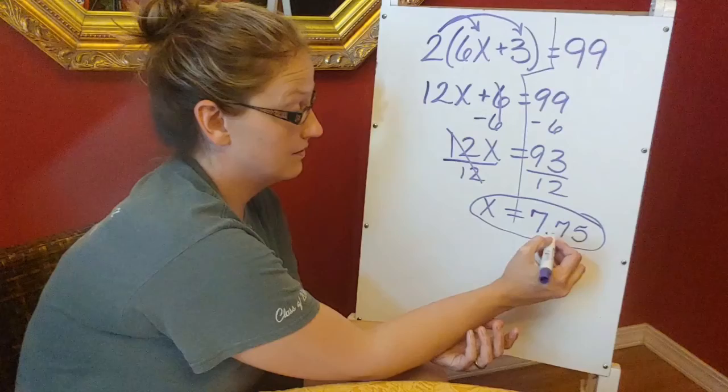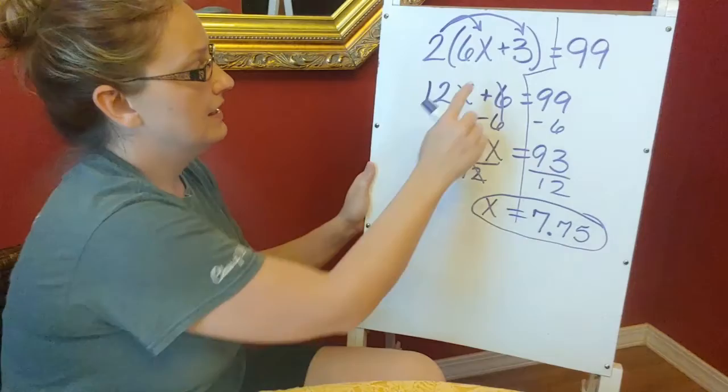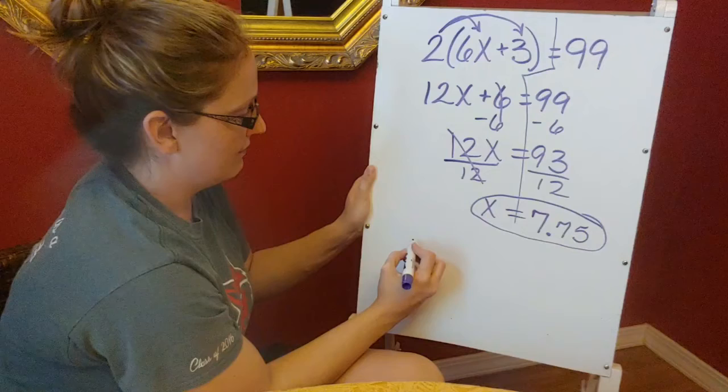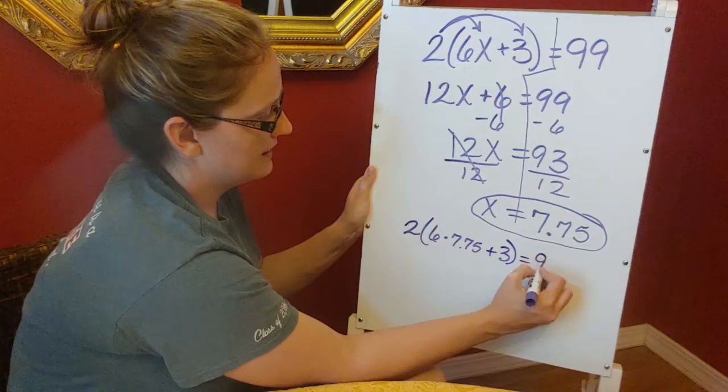7.75. If you're in doubt as to whether or not you did that correctly, we can plug it back into my original equation and check it. So I'm going to take this equation. Only instead of x here, I'm going to put in 7.75.